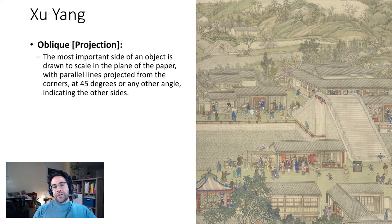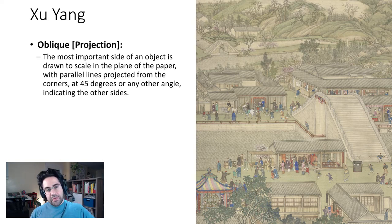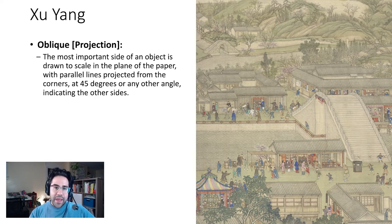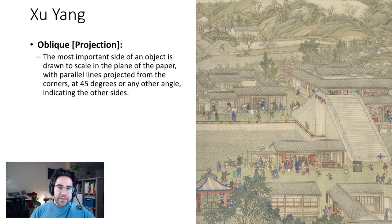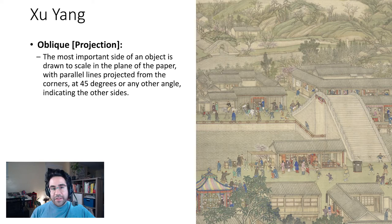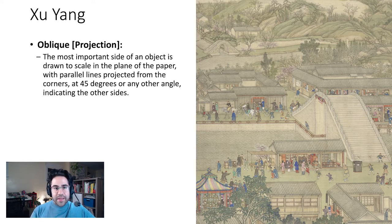We're also going to talk about projection systems — how is the artist translating something that is three-dimensional to the two-dimensional screen or page? We've already talked about linear perspective and atmospheric perspective, which are two ways of creating depth in a two-dimensional image. Believe it or not, there are many different ways of projecting into 2D space.